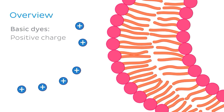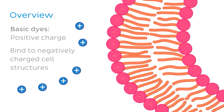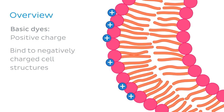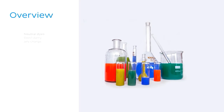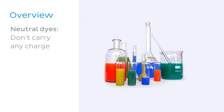Basic dyes, on the other hand, carry positive charges and as such will bind to negatively charged cell structures. Here we see the positively charged dye binding to the negatively charged cell membrane. This makes the structure appear blue in this example. Note that neutral dyes can also be used and these don't carry any charge. This is just to give you a bit of background into why these dyes bind to particular cellular structures.